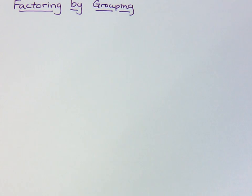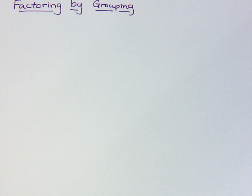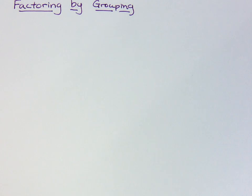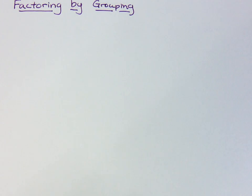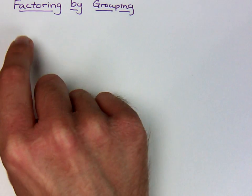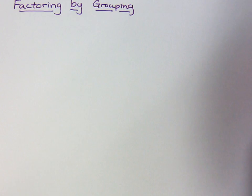As you've seen so far, we've talked about just basic factoring. We've talked about taking out the greatest common factor. Sometimes we have to take out a negative. But we also saw that sometimes the factors we take out are not just single terms, but they are groups. And so that leads us to our discussion of factoring by grouping.